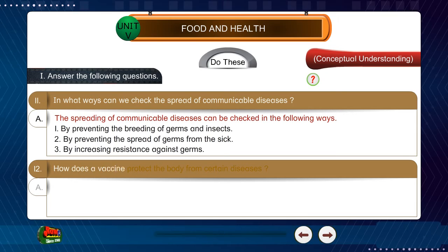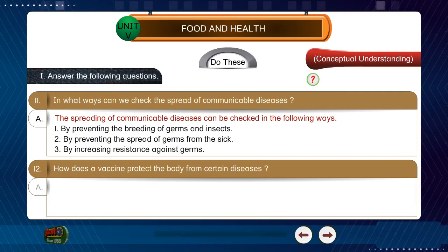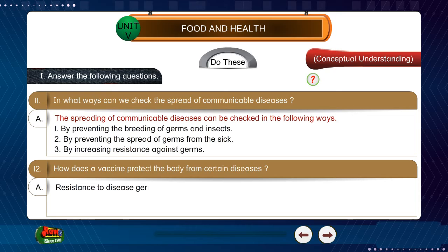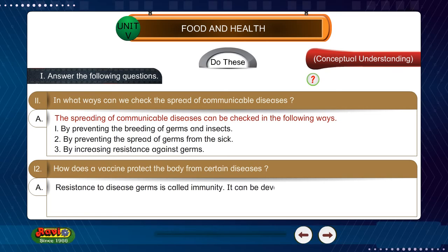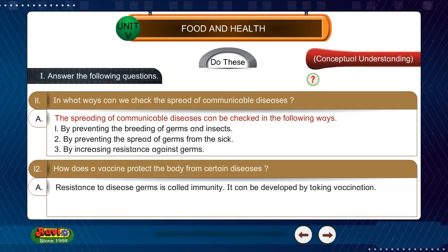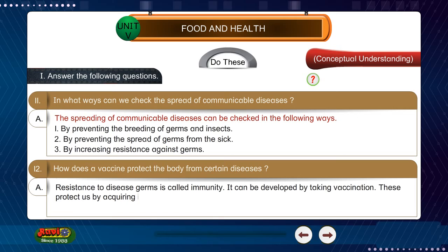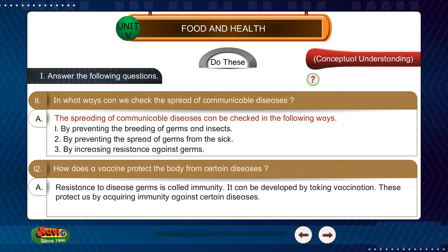Question 12: How does a vaccine protect the body from certain diseases? Answer: Resistance to disease germs is called immunity. It can be developed by taking vaccinations. These protect us by acquiring immunity against certain diseases.